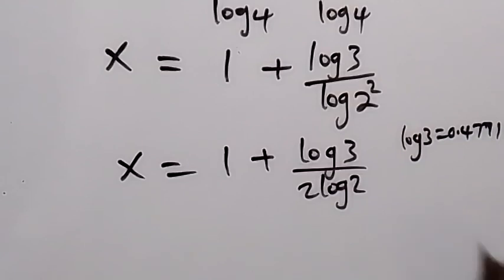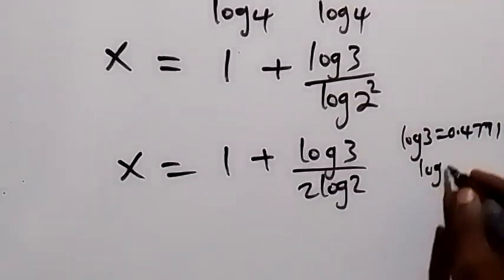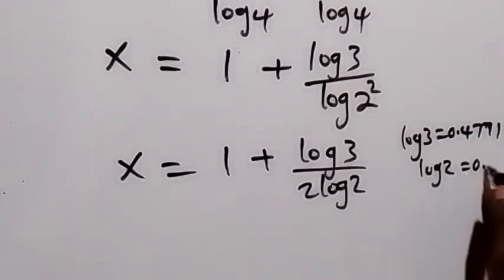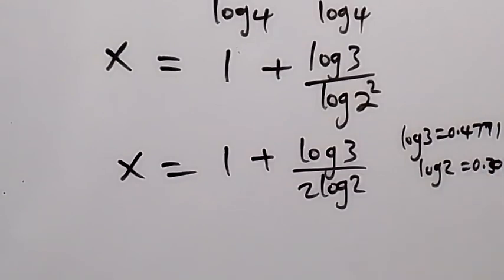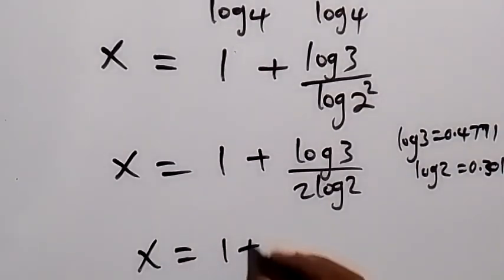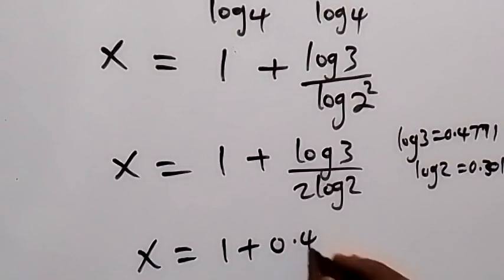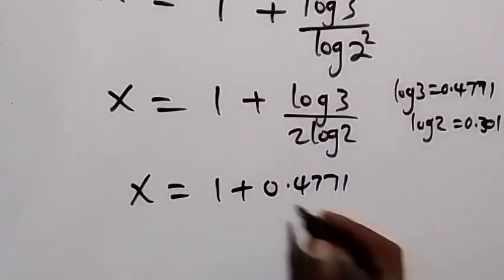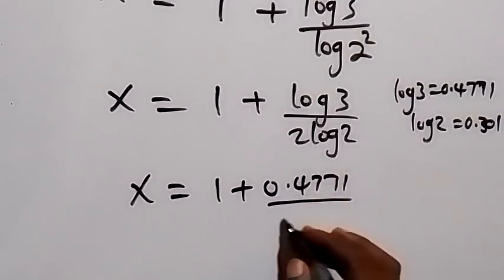And log 2 is 0.301. So when we substitute this here, this will give us x equals to 1 plus 0.4771, then divide by 2 log 2, that's 2 times 0.301.